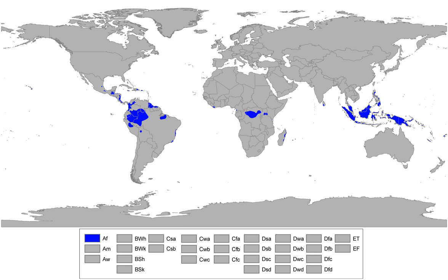A tropical rainforest climate is typically hot and wet. Places with this climate typically lie within 10° of the equator.